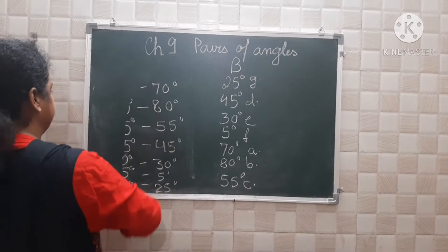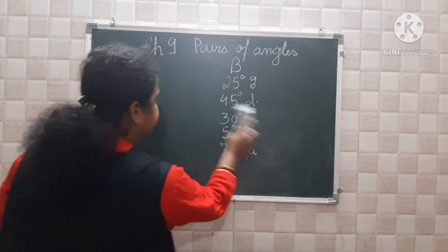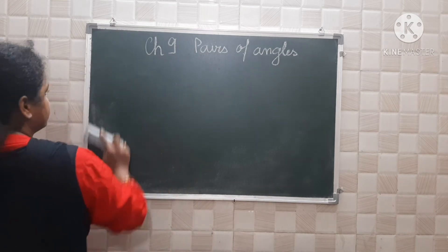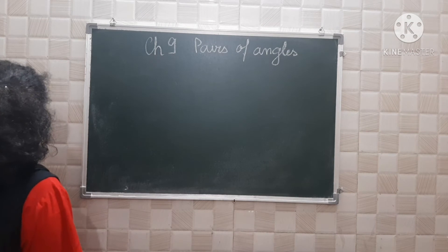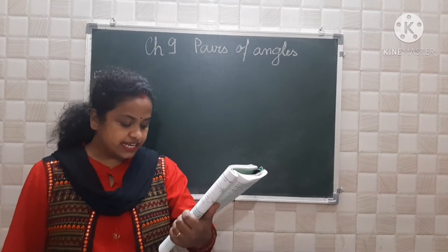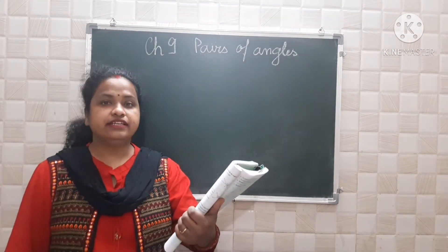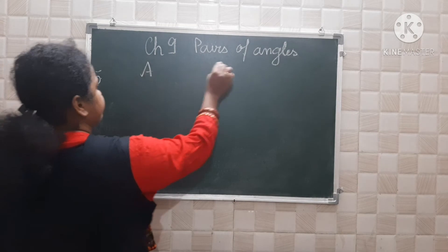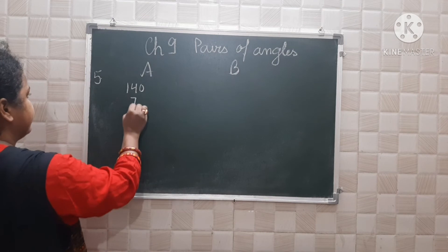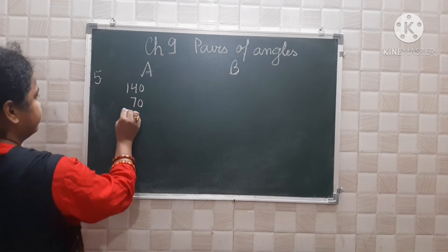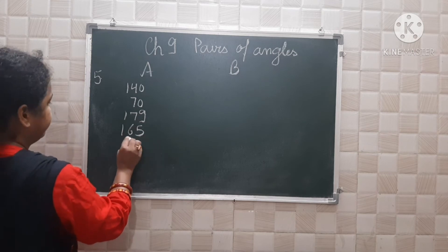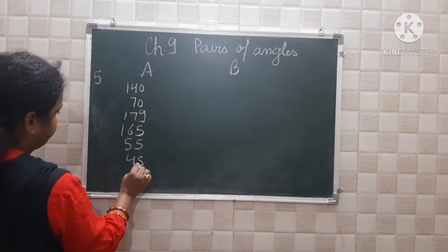Sorry, that was question number 4. Now see question number 5. For each angle in Group A, find its supplement in Group B. Group A has: 140, 70, 179, 165, 55, 45, and 80 degrees.